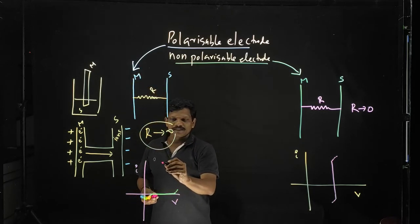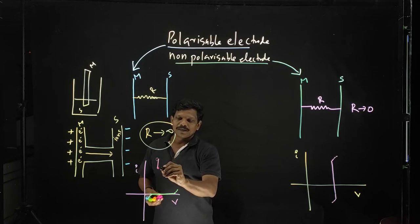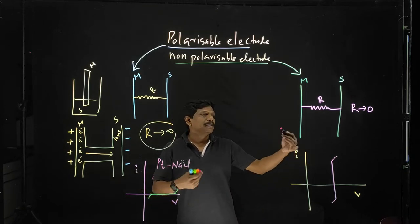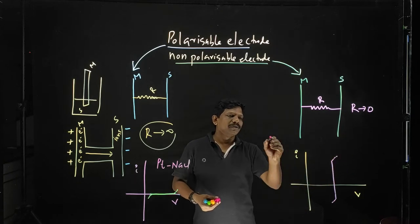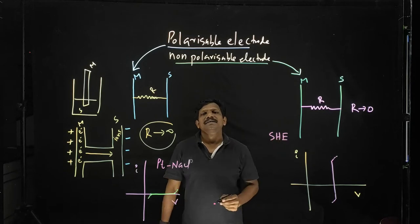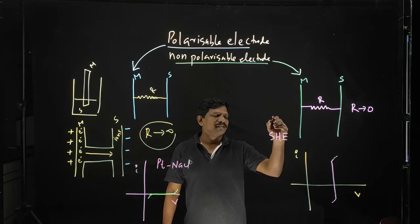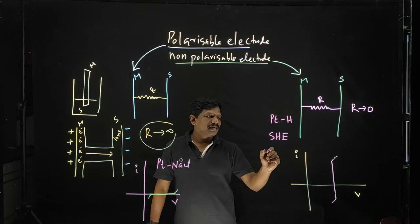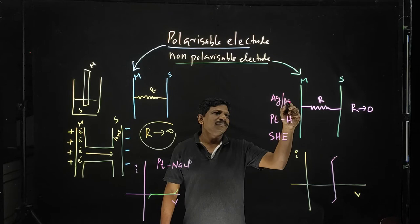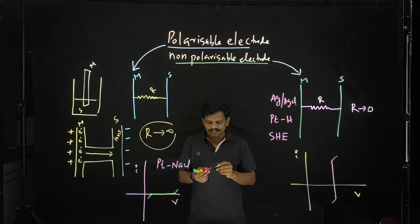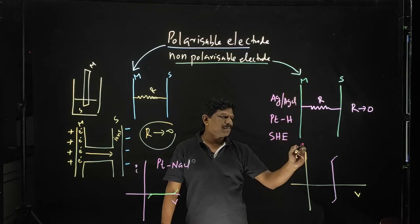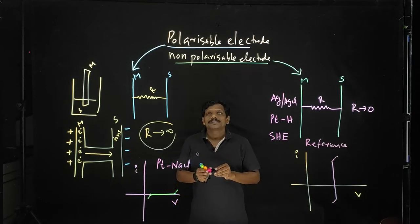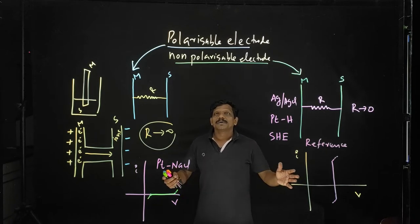If you suggest an example for a polarizable electrode, I can tell you the name of platinum NaCl electrodes. For non-polarizable electrodes, a very good example is our standard hydrogen electrode — a platinum hydrogen electrode. Another example is the Ag/AgCl electrode. Non-polarizable electrodes are actually used as reference electrodes. That is about the difference between polarizable and non-polarizable electrodes.